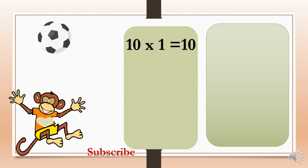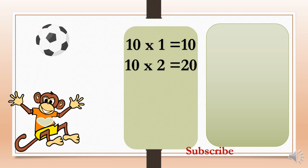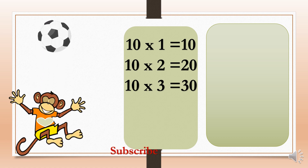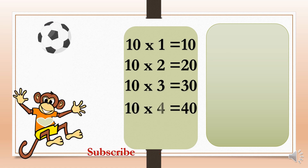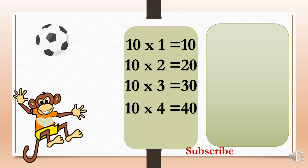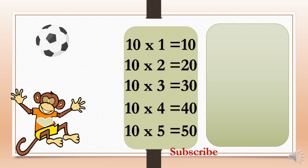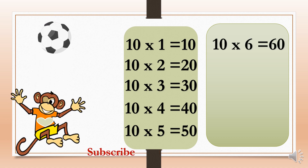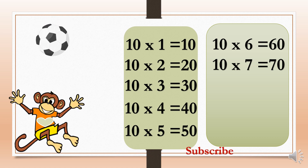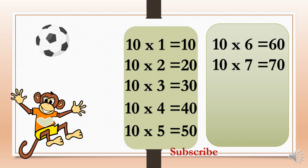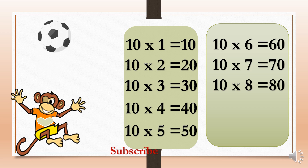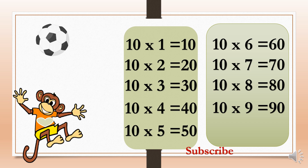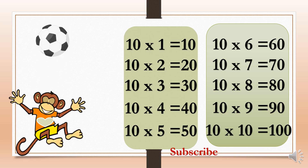10×1=10. 10×2=20. 10×3=30. 10×4=40. 10×5=50. 10×6=60. 10×7=70. 10×8=80. 10×9=90.